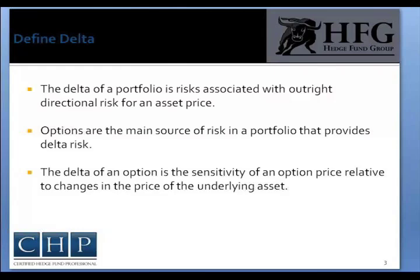The Delta of an option is the sensitivity of the option price relative to changes in the underlying price of an asset. The Delta tells option traders their exposure to outright changes in the underlying asset price. For example, if you own one contract option of Apple at an at-the-money strike, you would own about 50% Delta of that underlying. One contract equals 100 shares in options, so a Delta of 50 would equal approximately 50 shares of exposure to the underlying price.